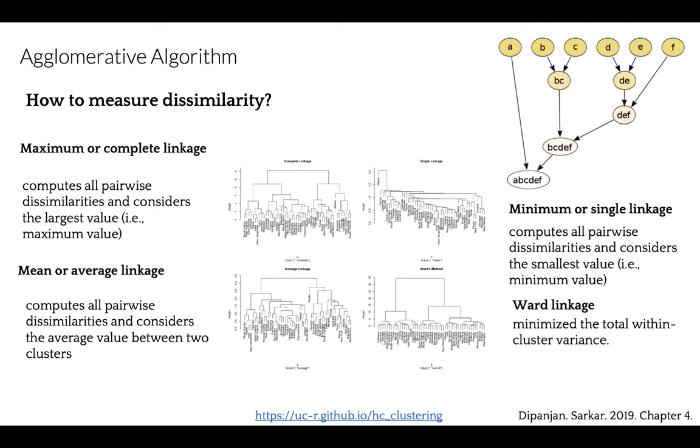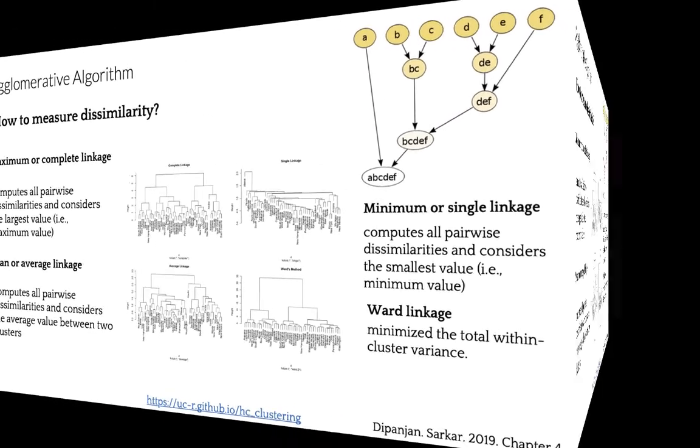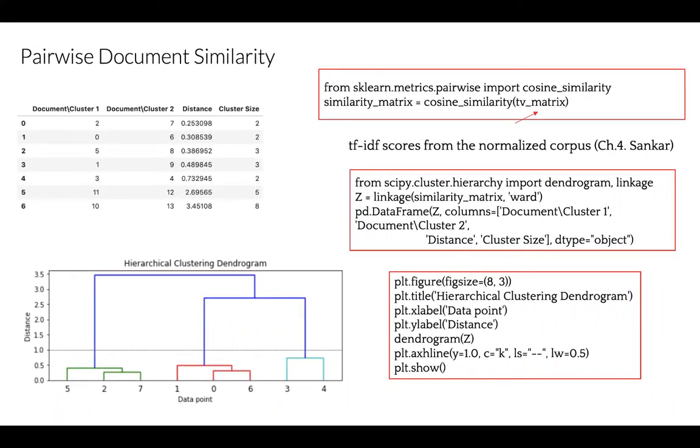And finally, Ward's minimum variance method minimizes the total within cluster variance, so that at each step the pair of clusters with minimum between cluster distance are merged, as you can see in the bottom right in the figure.